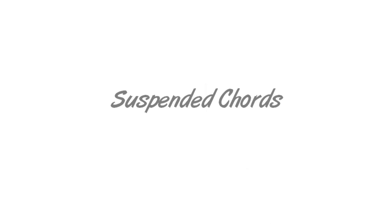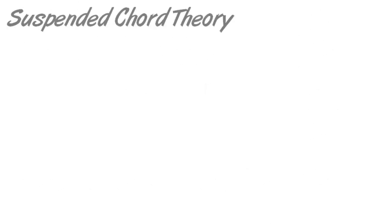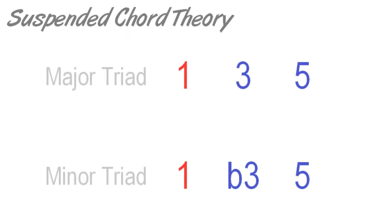First, a little theory. The most basic definition of a suspended chord is where the third of the chord has been replaced with a perfect fourth or major second interval.